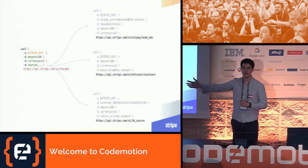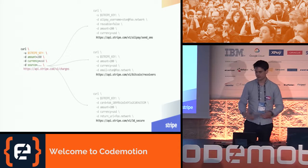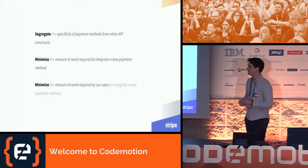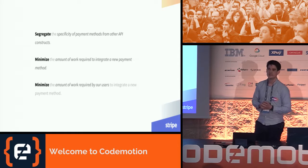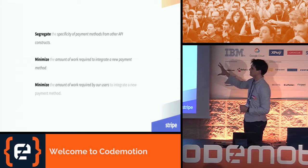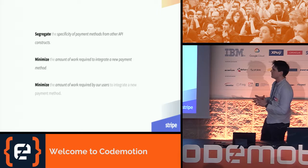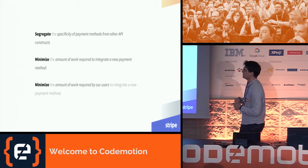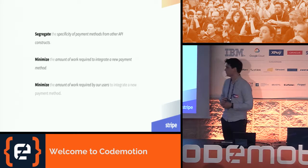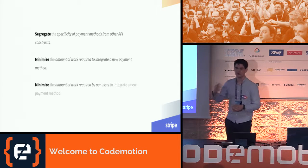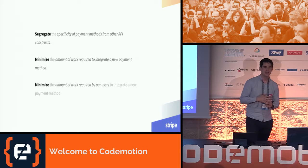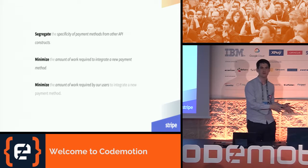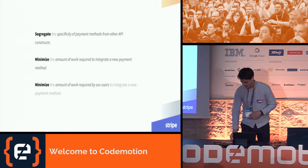When we realized that as we scale globally we needed to handle dozens if not hundreds of payment methods, we decided to redesign that API with specific design principles in mind. We wanted to segregate the specificity of the payment method from the API constructs. We wanted to minimize the amount of work required to integrate a new payment method for us — and in doing so, minimize the amount of work required by all users to integrate the new payment method. We really believed that the amount of work we were doing to add a new payment method was a great proxy for the amount of work required by all users.